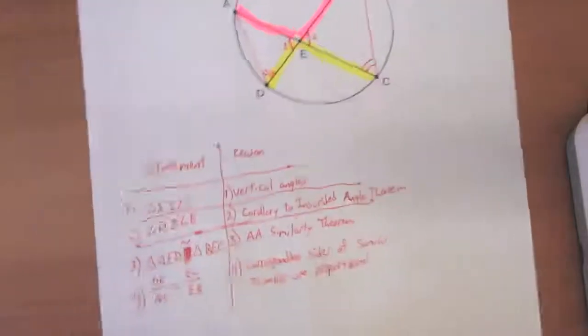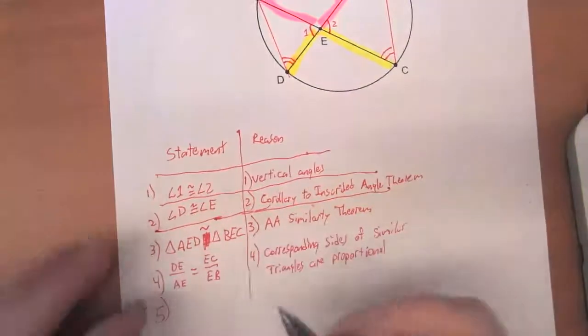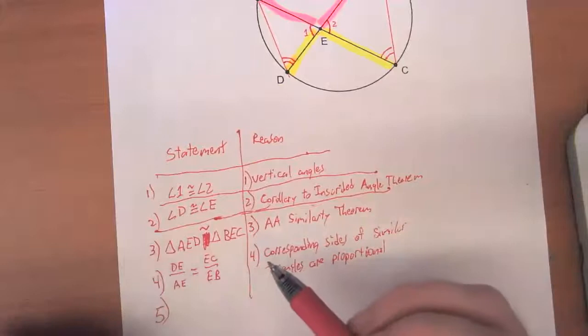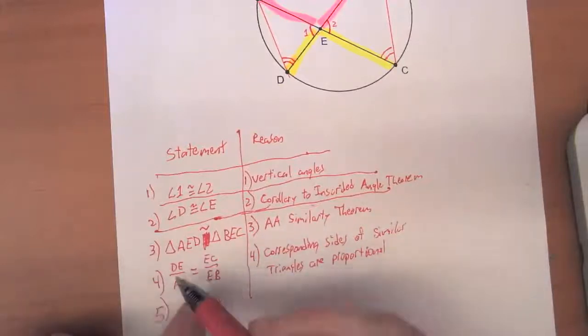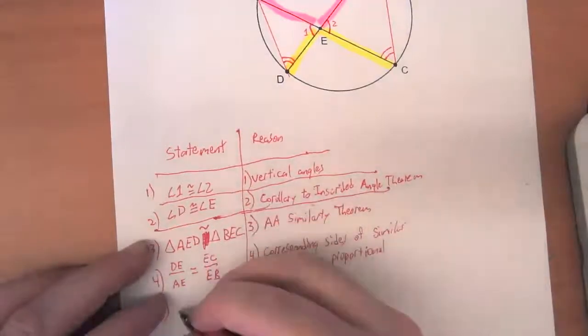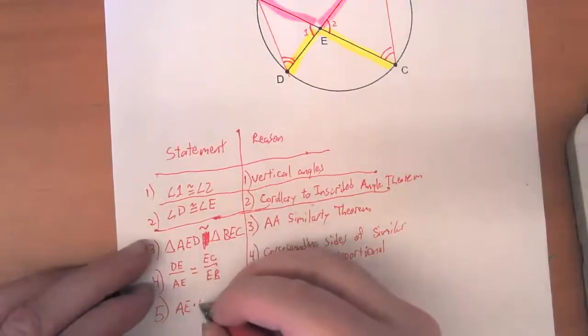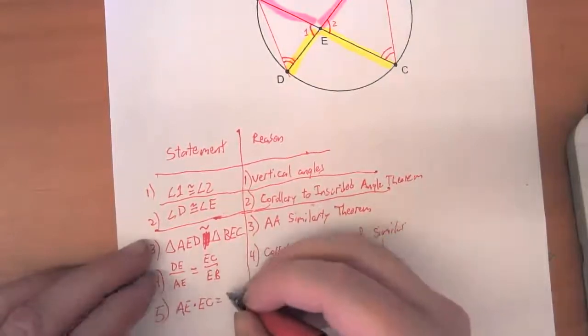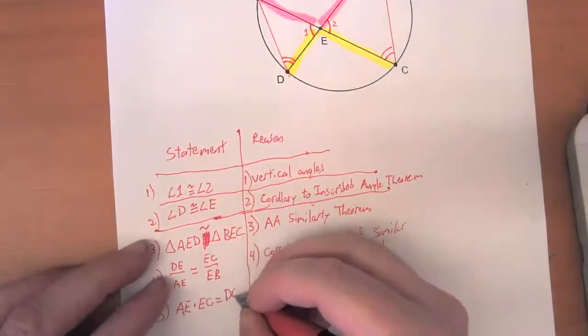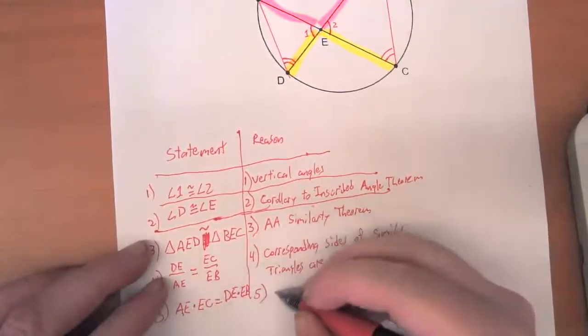And so the last step that we're going to do, just for grins, is we're going to cross multiply here so that we can write this as a product of two numbers instead of a quotient of two numbers. And so if I do that here, I've got AE times EC is equal to DE times EB, and that's just cross multiply.